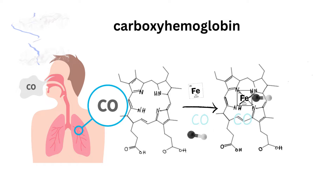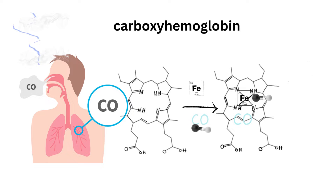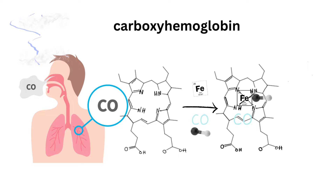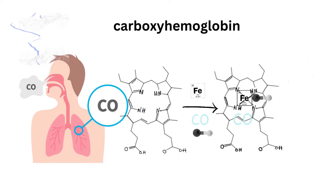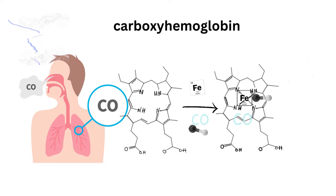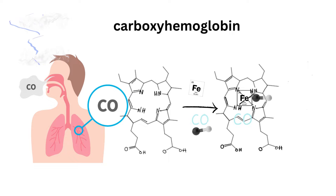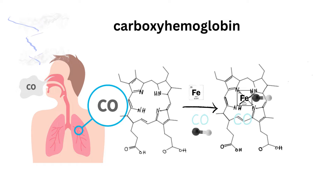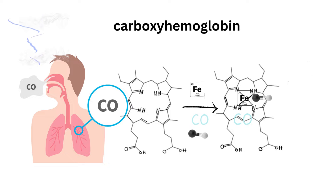Carboxyhemoglobin: carbon monoxide has an affinity 240 times greater than oxygen for hemoglobin. It is a silent killer — an odorless and colorless gas — arising from situations such as inhaling smoke during fires, industrial pollutants, coal, charcoal, leaky heaters, smog, and tobacco smoke. This causes hypoxia because carbon monoxide outcompetes oxygen and does not allow hemoglobin to pick up oxygen, causing hypoxia due to carbon monoxide poisoning.